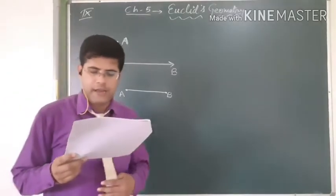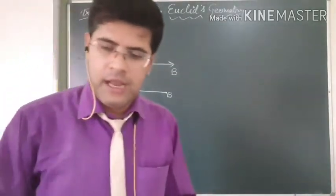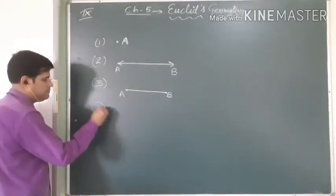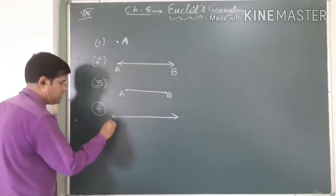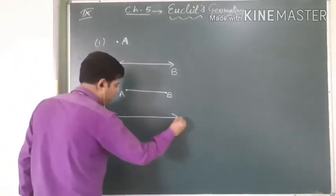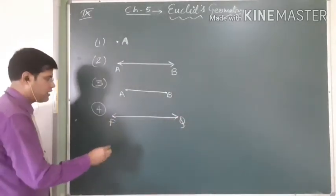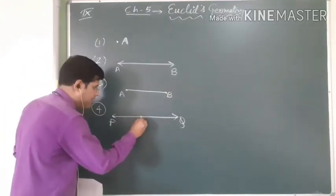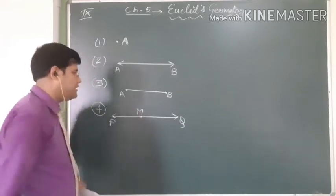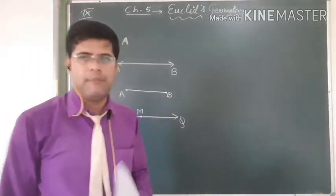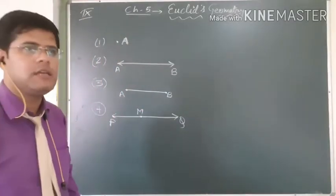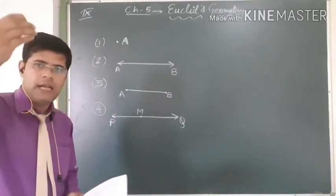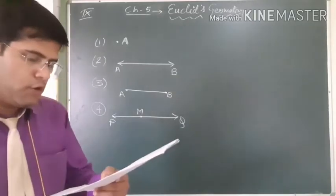The fourth definition: a straight line is a line which lies evenly with the points on itself. If M is a point on line PQ, it means M is on the straight line — not above the line, not below the line.